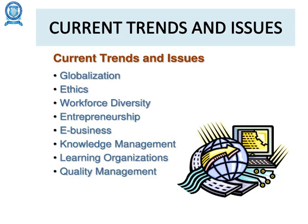5: Managing in an e-business world — e-business is a comprehensive term describing the way an organization does its work by using electronic linkages with its key constituencies in order to efficiently and effectively achieve its goals. 6: Knowledge management and learning organizations — change is occurring at an unprecedented rate. To be successful, today's organization must become a learning organization: one that has developed the capacity to continuously learn, adapt, and change.